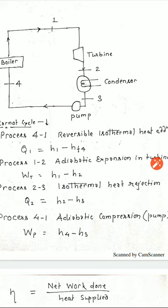Process 2 to 3. Isothermal heat rejection. So, what is the heat rejection? H2 minus H3. Means enthalpy before entering to the condenser minus enthalpy after the rejection of heat at point 3.